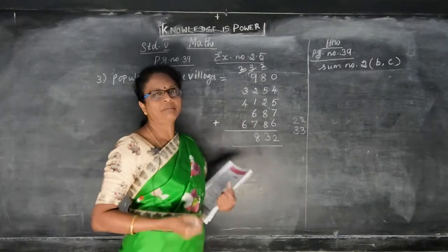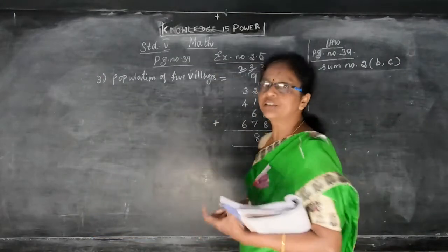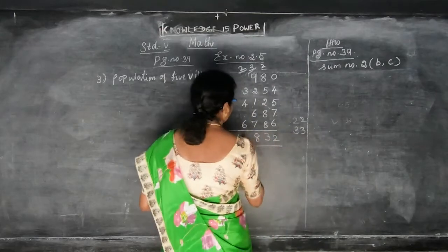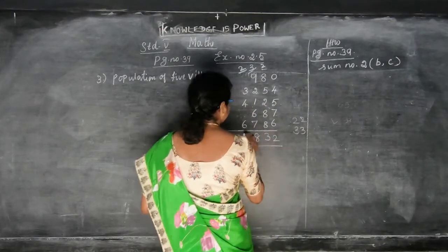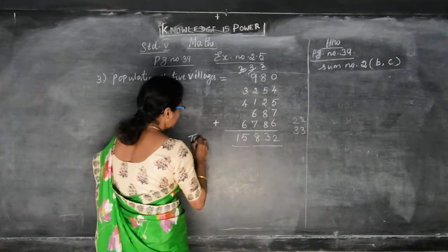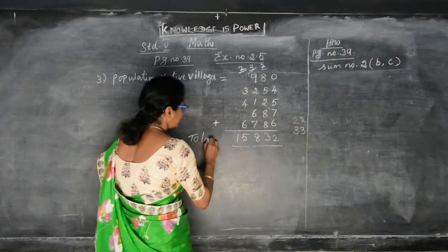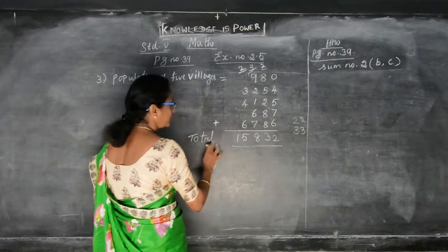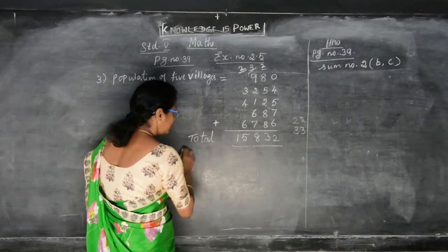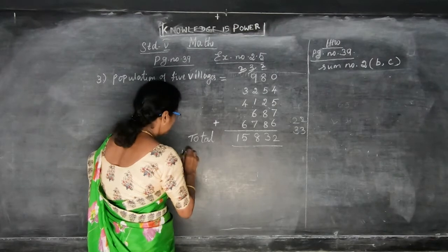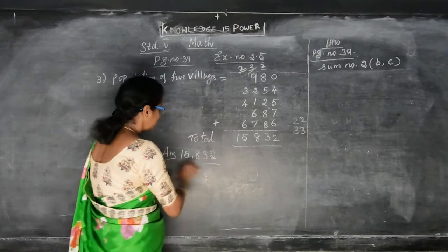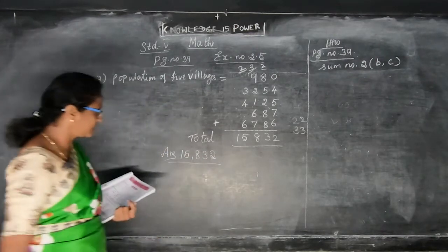9 in the mind and 6 in the fingers — that gives you 15. Put the next digit; there is no more number. So this is the total. In a statement sum we have to put total. The answer is 15,832.